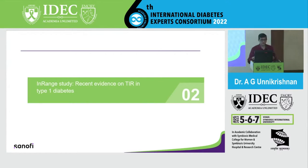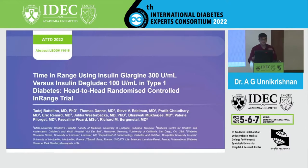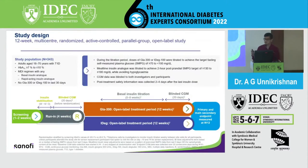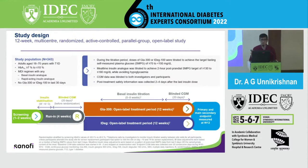This is the In-Range study, which looks at recent evidence of time in range in type 1 diabetes — a head-to-head randomized controlled trial. To understand time in range, you require a continuous glucose monitor, which measures blood sugar levels throughout the day. If 70% of the time the blood sugar is between 70 to 180 mg/dL, the time in range is considered good. These CGM devices typically measure blood sugar levels every 15 minutes, giving about 96 readings per day, and multiplied by 14 days, you get quite a large number of readings.